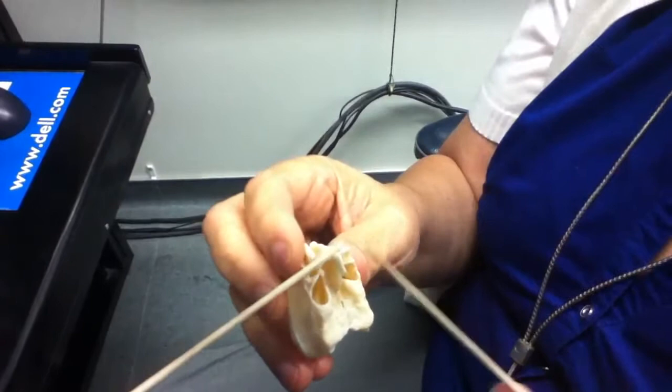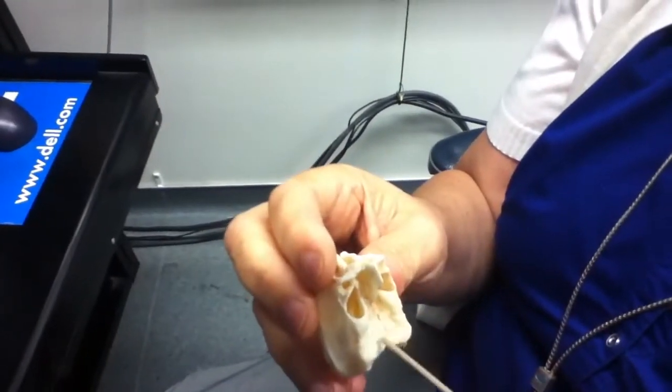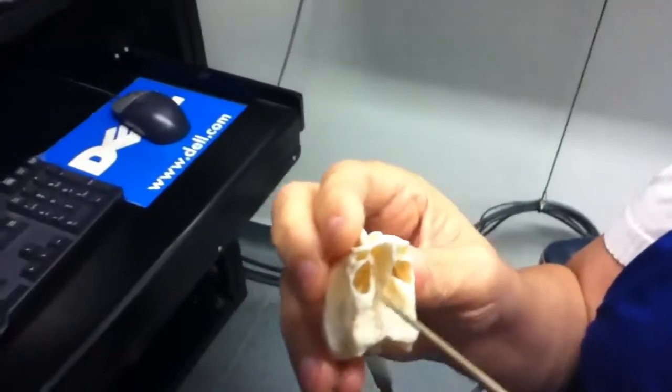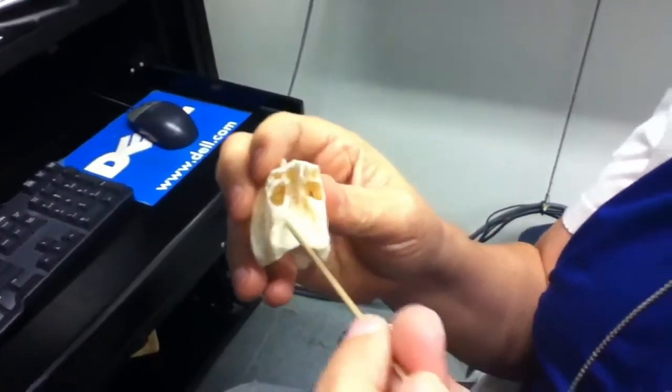This is crista galli. What is this? Those are the olfactory foramina, and they sit in the cribriform plate.